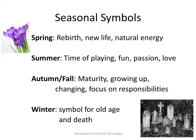Then we move into seasonal symbols. Spring is rebirth, new life, natural energy. Summer is our time of playing, fun, passion, and love — all of those activities that we really enjoy, especially when we're teenagers. Then autumn and fall represents maturity: we have to grow up, change, and focus on our responsibilities. And then, sadly, winter is a symbol for old age and death. When we go through these cycles, you oftentimes understand them better as you get older, because you know the difference between being in the summer and being part of the autumnal generation.